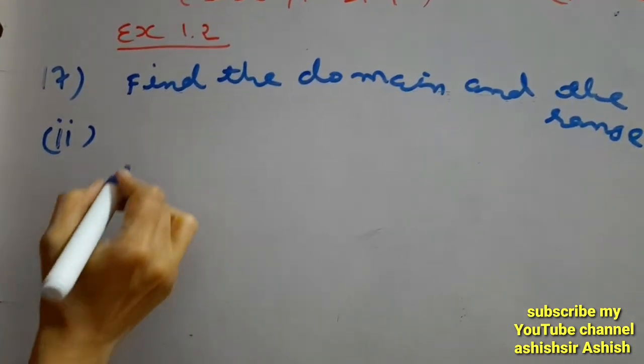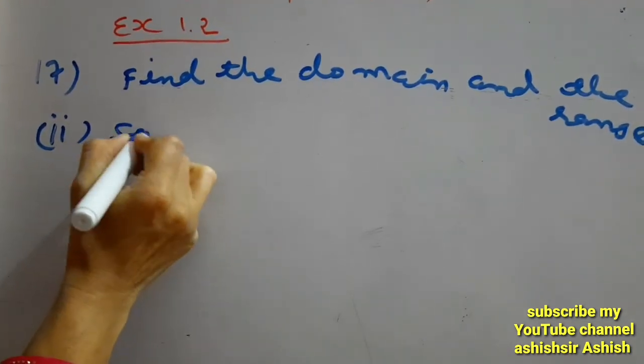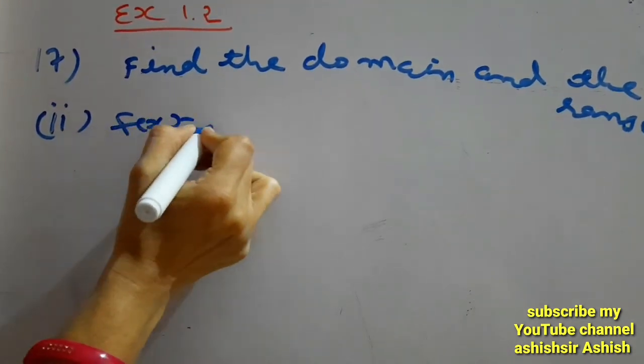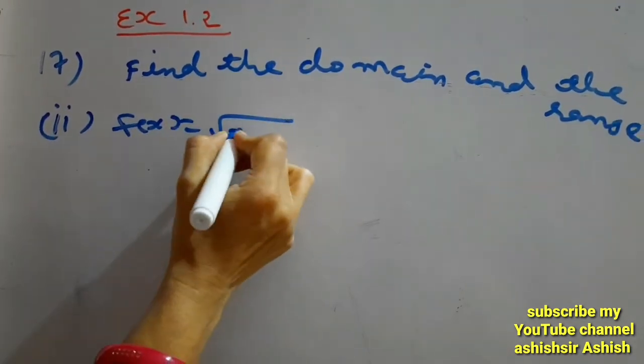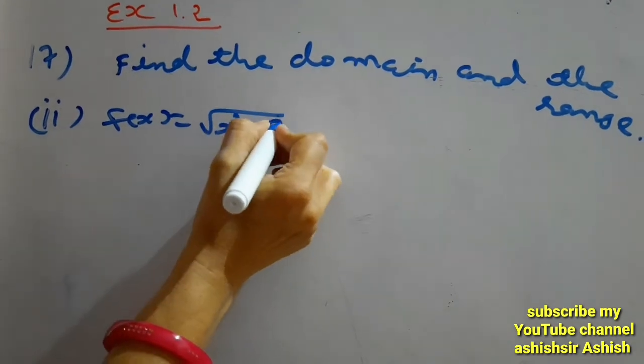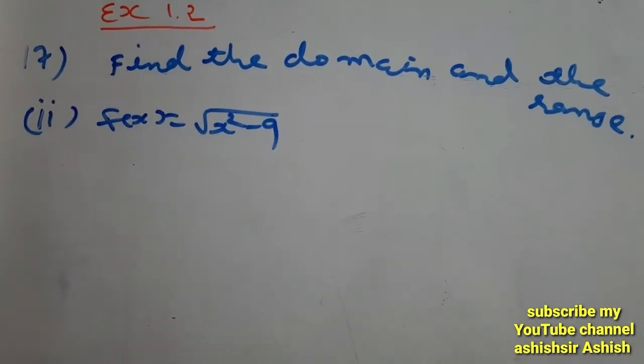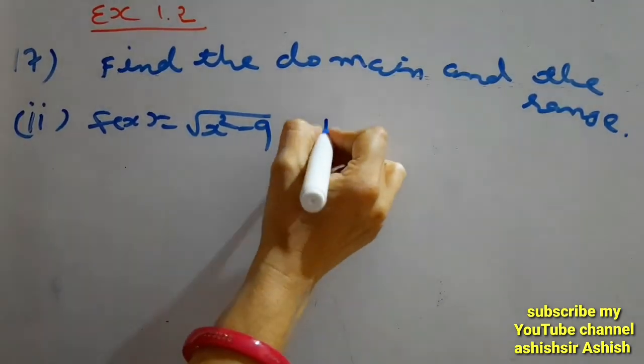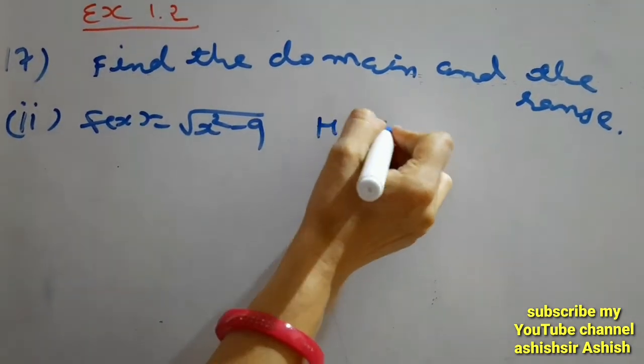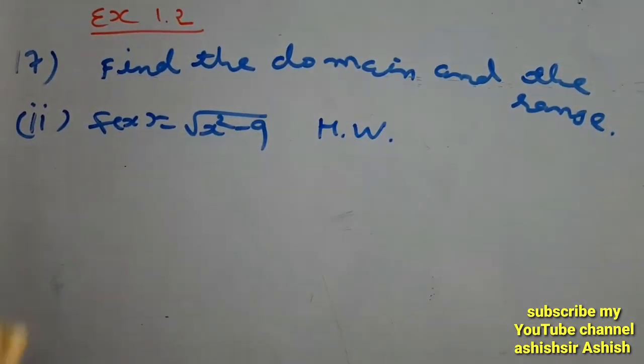The second function is f(x) = √(x² − 9). You can solve this question easily.